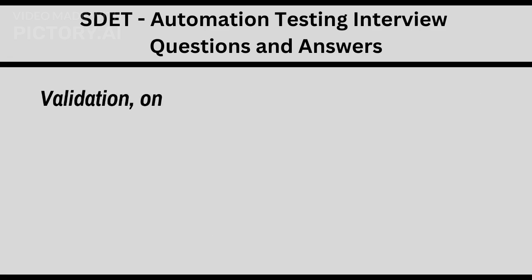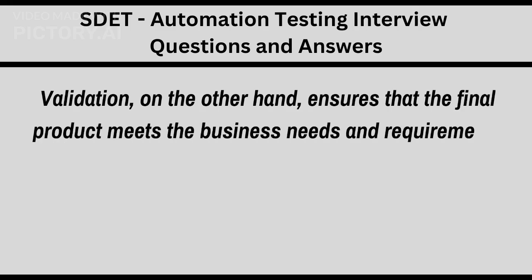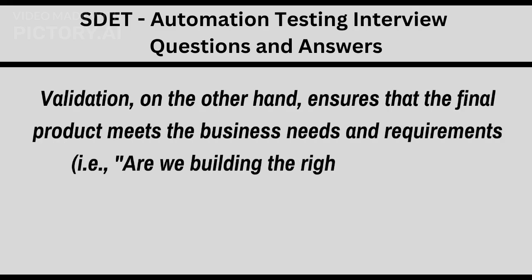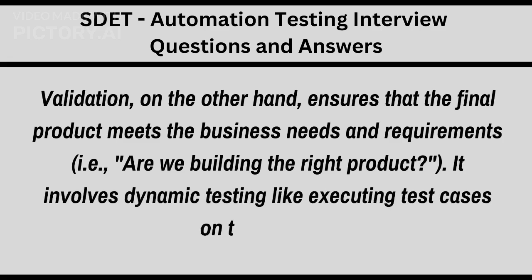Validation, on the other hand, ensures that the final product meets the business needs and requirements — i.e., are we building the right product? It involves dynamic testing like executing test cases on the product.